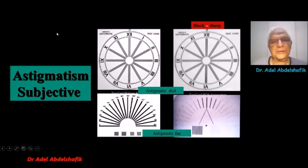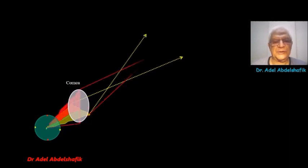Suppose we have a cornea with the horizontal meridian strong and vertical meridian weak. So rays in yellow will come to a focus closer to the cornea compared to the rays in red.